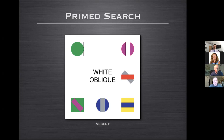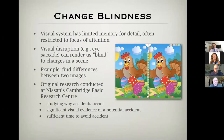That has obvious consequences for visualization: we can't expect that letting you look at an abstract visualization for a longer period will give you better memory for recall. This ties directly back to our investigation of aesthetic visualizations and whether they increase memory for detail. You already know this phenomenon—it's called change blindness. The visual system has a limited memory for detail, often restricted to our focus of attention. Visual disruption can render us blind to changes in a scene. If you look away and look back, and something has changed, you may not see it because the visual system assumes consistency in the absence of contradicting evidence.